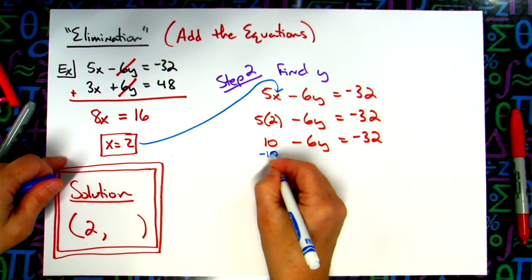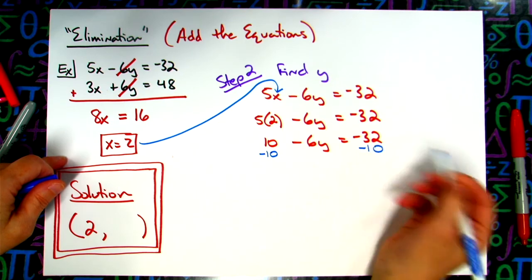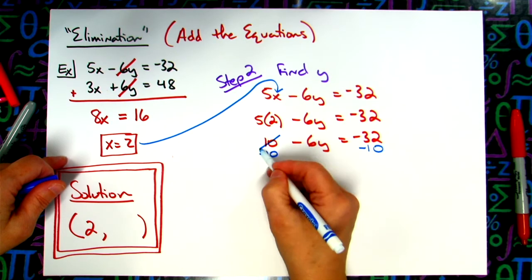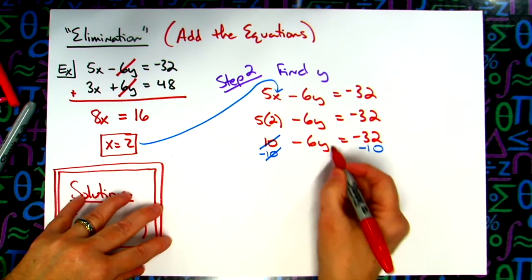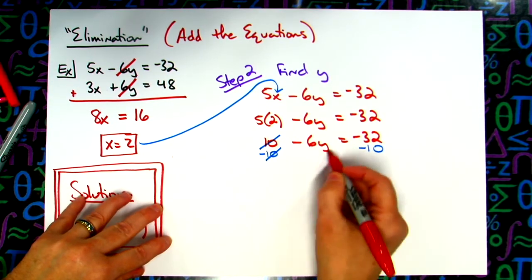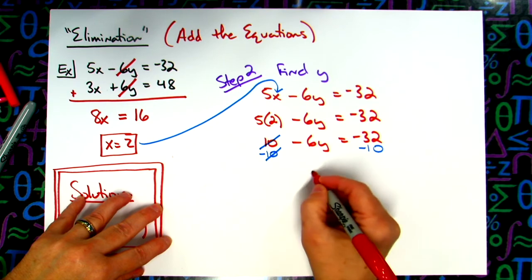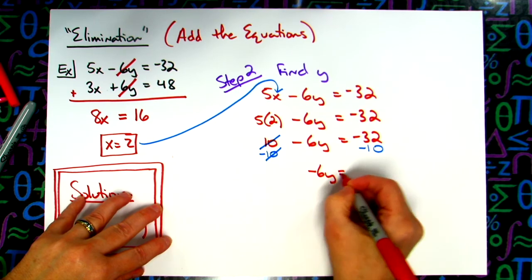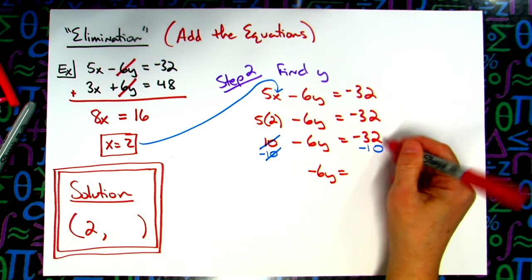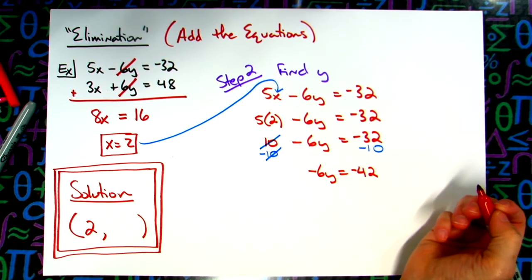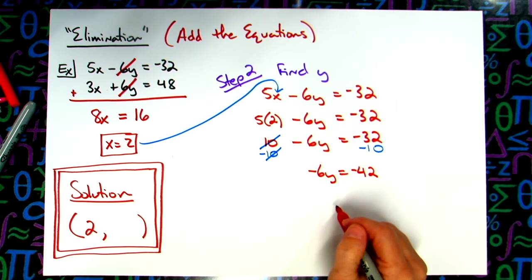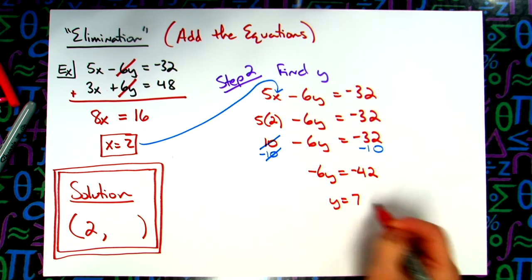Now I'm down to a two-step equation. I can subtract 10 and subtract 10. 10 minus 10 falls out over here, which is what we want. I have a negative 6y. Don't drop that negative. Negative 6y. And then when I add these two, negative 42. And then that divides out pretty nice. Divide both sides by that negative 6. Negative divided by negative is positive. So y equals a positive 7.